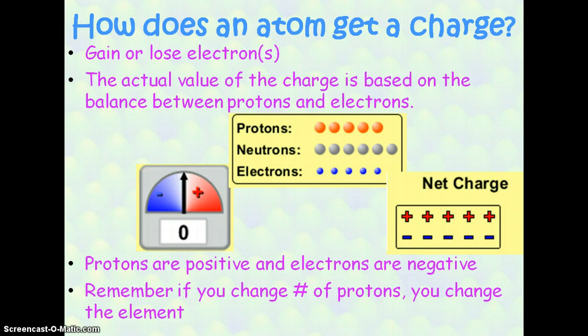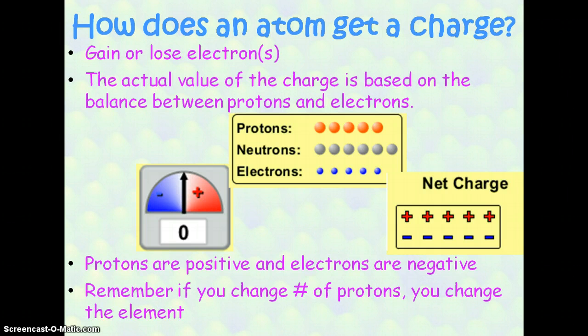How does an element get a charge? To get a charge, it's going to have to gain or lose electrons. You can't gain or lose protons because if you do, the proton defines an element, so if you change the number of protons, you've changed the element. Basically, an imbalance between the number of protons and electrons is what gives us our charge. Protons are positive and electrons are negative. If you have more positive than negative, or more negative than positive, then you have an atom with a charge.